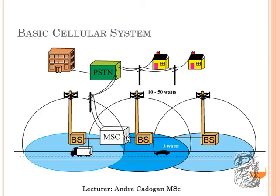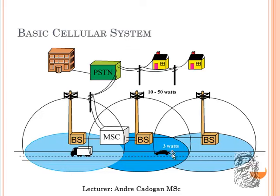Each mobile switching center is connected to a base station controller and a base station. These are what you call base stations and base station controllers. Here is the cellular structure where a car is moving from one cellular coverage area to the next. We're going to talk about the concept of when that car moves away from one coverage area, how it connects to a different cellular structure.